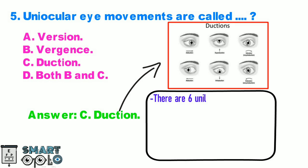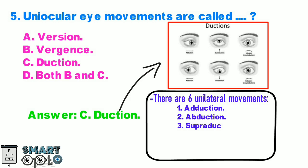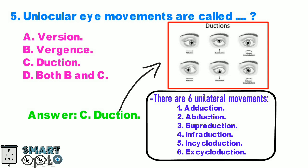There are 6 unilateral movements: 1. Adduction, 2. Abduction, 3. Supraduction, 4. Infraduction, 5. Incycloduction, 6. Excycloduction.